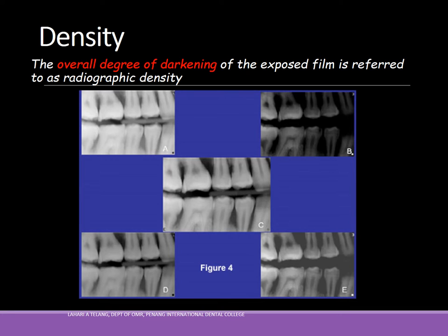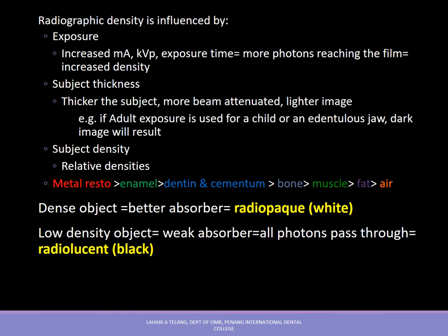Density is defined as the overall degree of darkening of an exposed film. Looking at these multiple bitewing radiographs, the density of radiograph B is greater because the overall degree of darkening is more compared to A or C. Density depends on exposure — if you increase the current or the voltage, exposure time increases, more photons reach the film, and density increases. Density also depends on the thickness of the subject; if the subject is thicker, more beam is attenuated and the image is lighter.